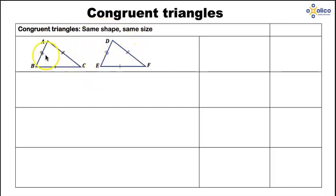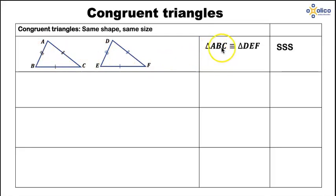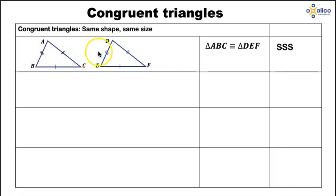The first case is when you have the three sides of one triangle matching the three sides of another. So AB and DE are the same, AC and DF are the same, and BC and EF are the same in triangles ABC and DEF. If we can show that the three sides from one triangle match three sides from another, we say the two triangles are congruent — we write triangle ABC is congruent to triangle DEF — and the reason is side, side, side. The remaining three angles will also be equal: A matches D, B matches E, and C matches F.